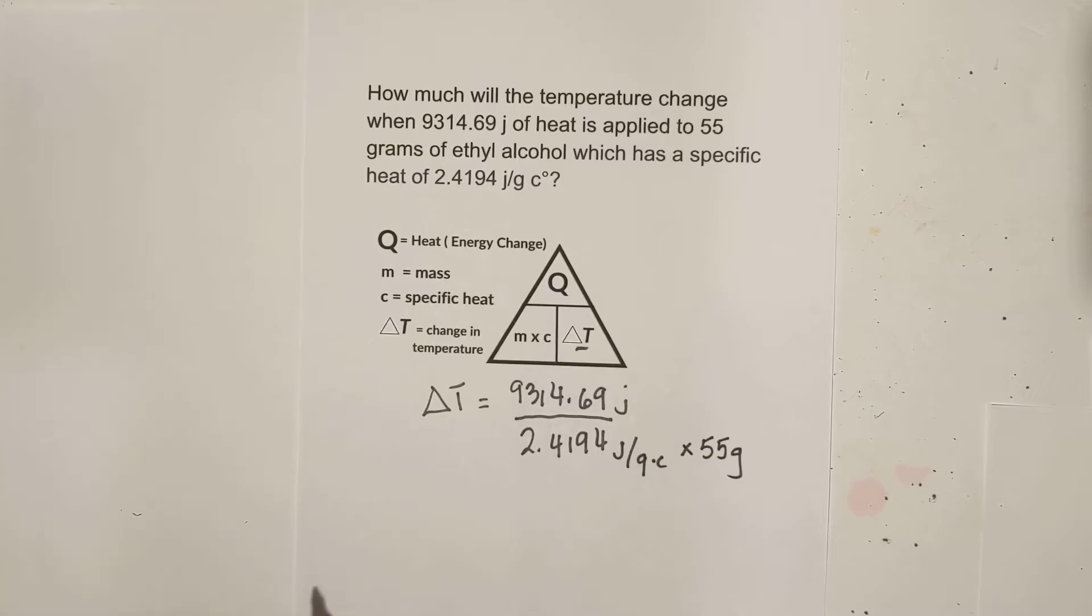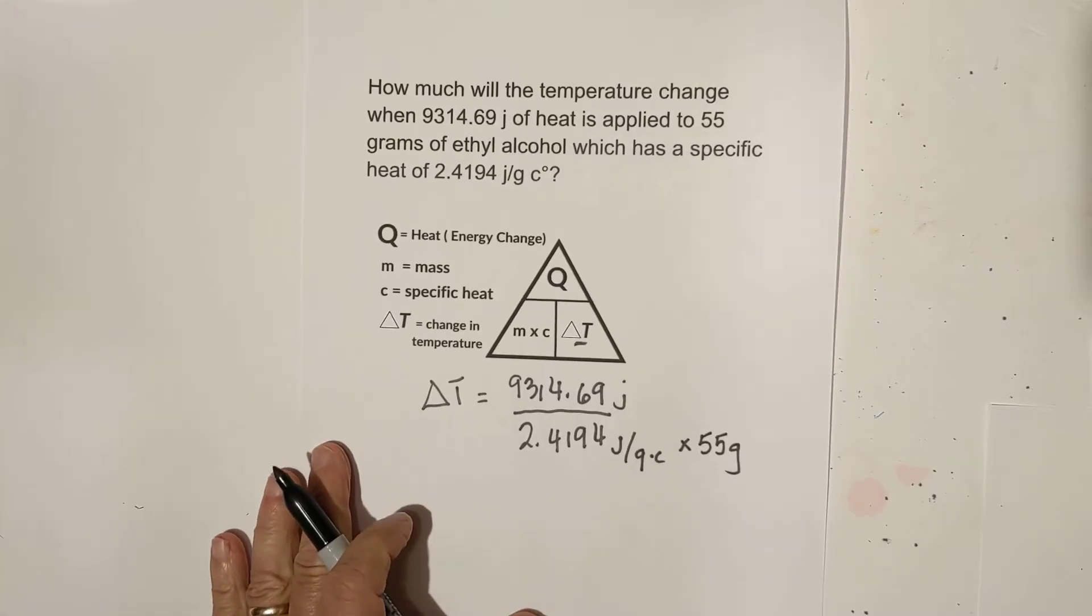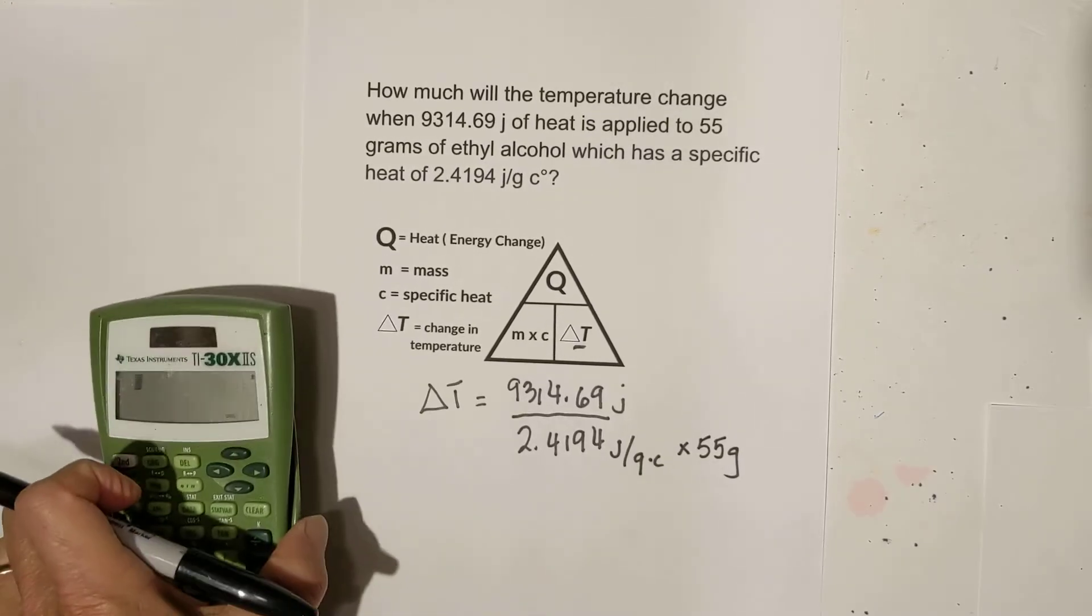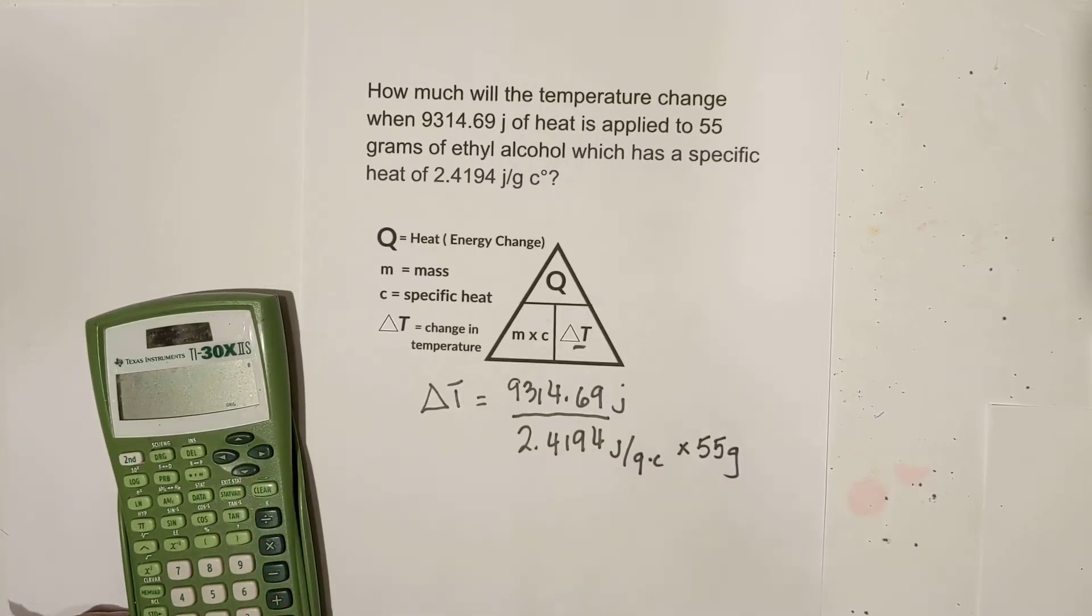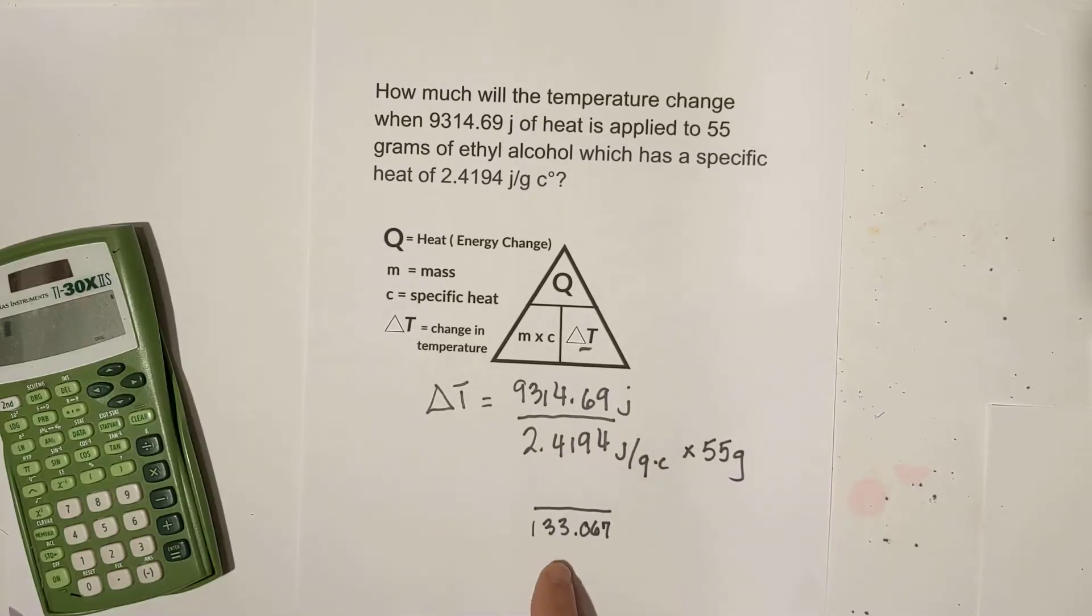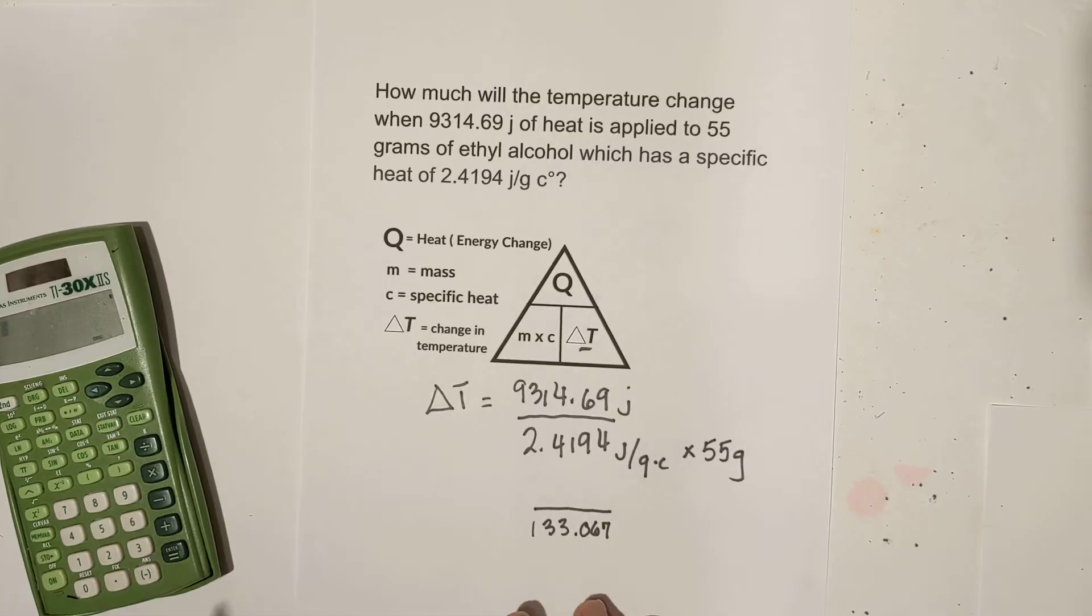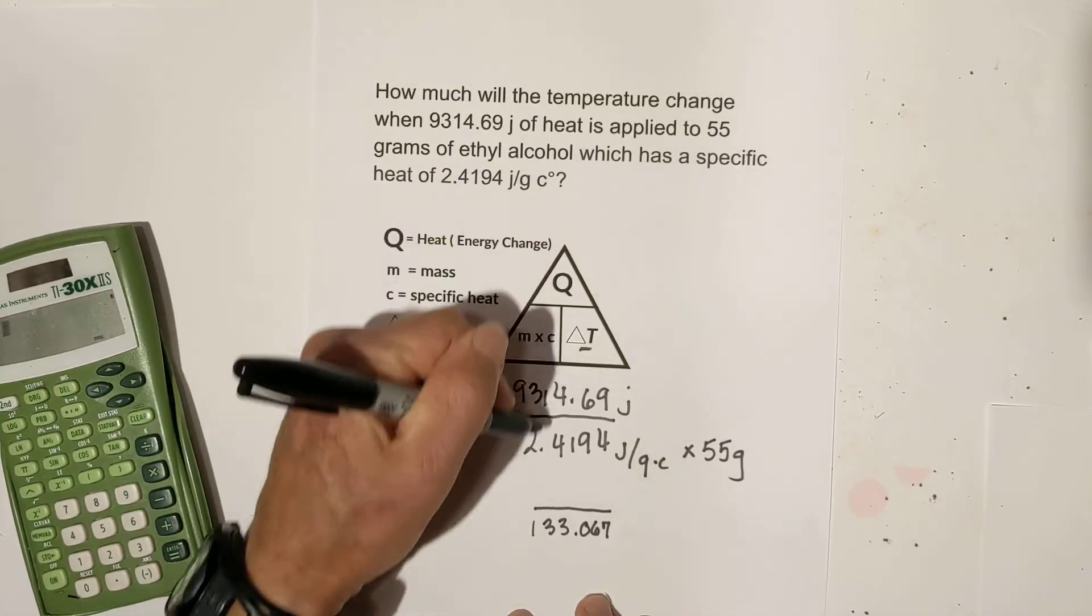So now all we do is just do the math. I'm going to first multiply this times this and I'll tell you what that is. So it is 133.067.